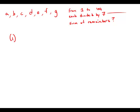Statement 1 tells us that the range of the remainders equals 6. If we know the range is 6, that tells us that the maximum remainder when you divide by 7 is 6, and the minimum is 0. So it tells us one number is divisible by 7 and has a remainder of 0, and another, when divided by 7, has a remainder of 6. But it doesn't tell us about the other five numbers — they could be anything.